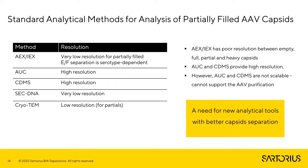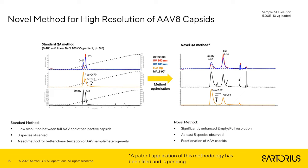There are only a few common analytical methods available for the analysis of AAV capsids, in particular to address partially filled capsids, and they all have different capabilities in terms of resolution. Anion exchange methods can identify partially filled capsids to some degree, but with low resolution, and the method depends on serotype. Currently only two methods — analytical ultracentrifugation and charge detection mass spectrometry — can provide reasonable resolution between full, empty, partially filled, and heavy or overfilled capsids. However, both methods are not scalable and cannot support the AAV purification process, highlighting the need for new analytical tools with better capsid separation.